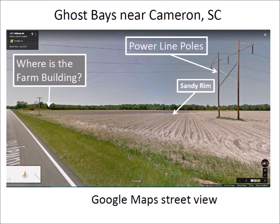And where is the farm building? The satellite image is from 2018, but the street images were made five years earlier in 2013, so the building had not been built yet. The dates are given in tiny letters at the bottom of the image.